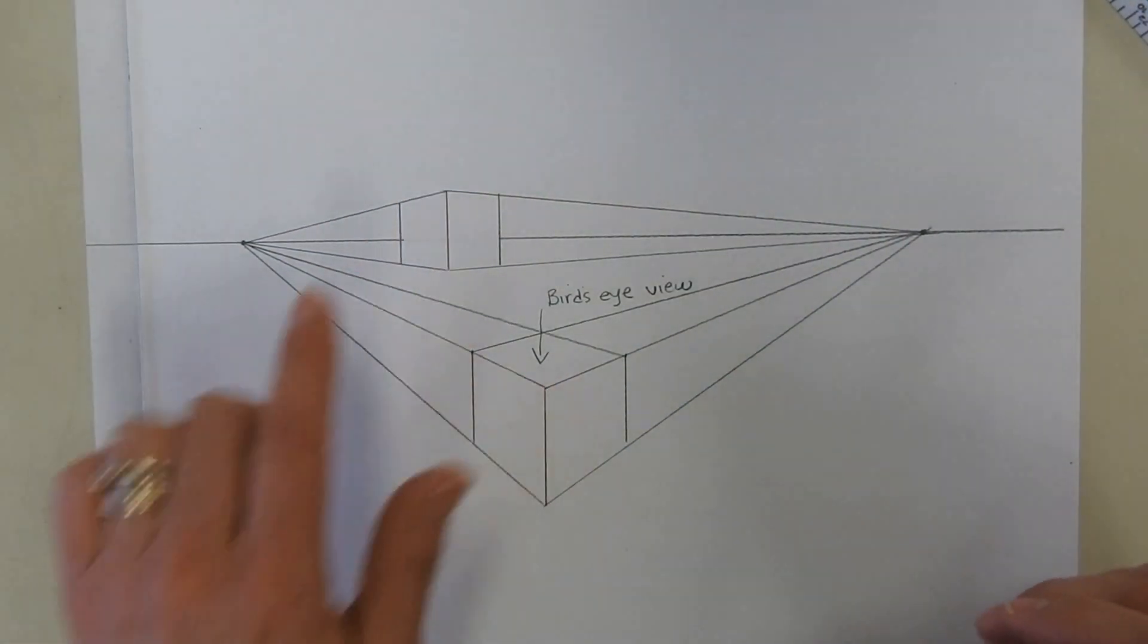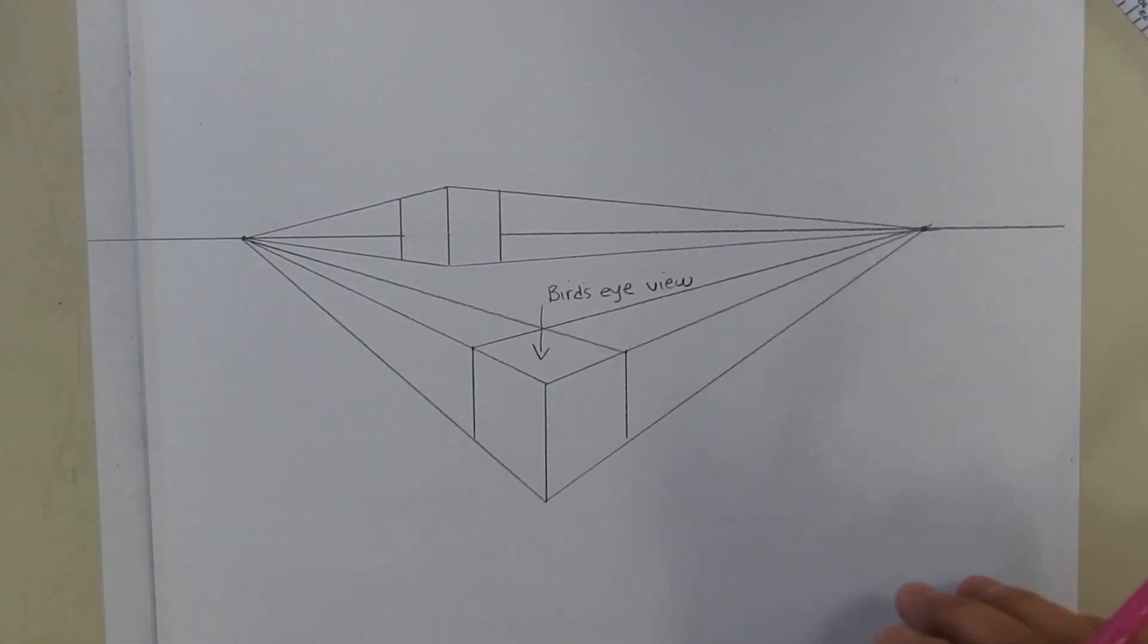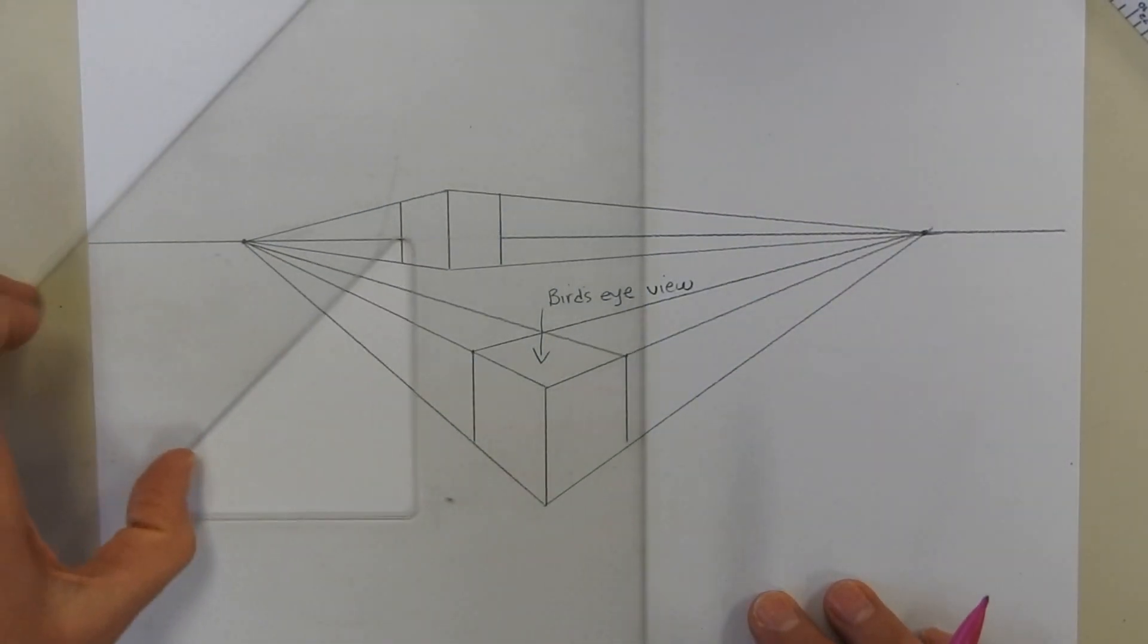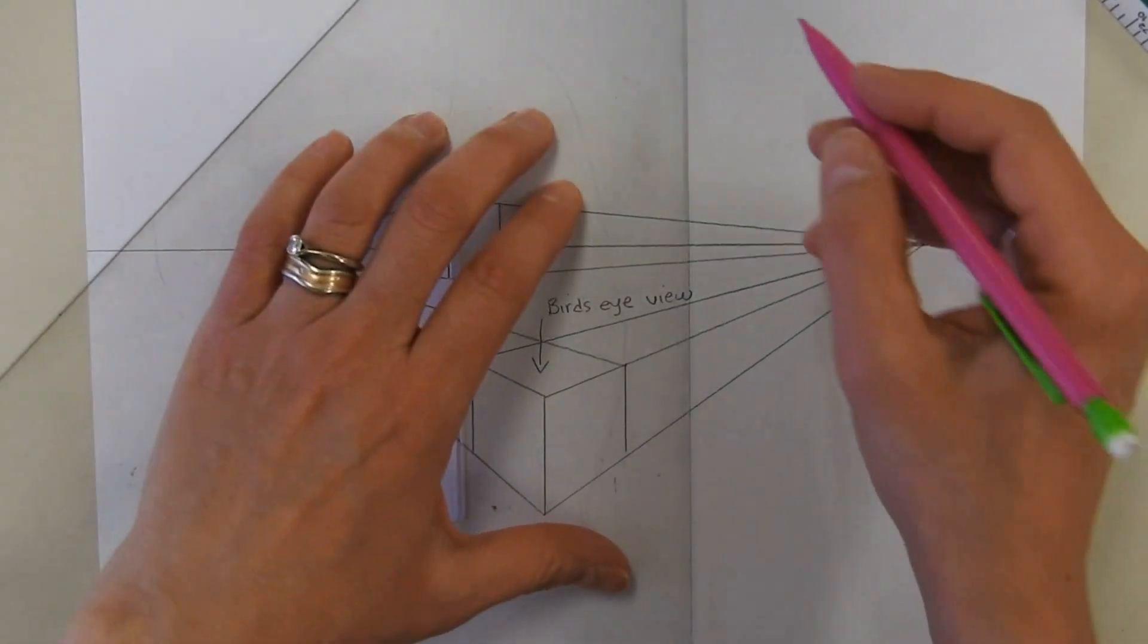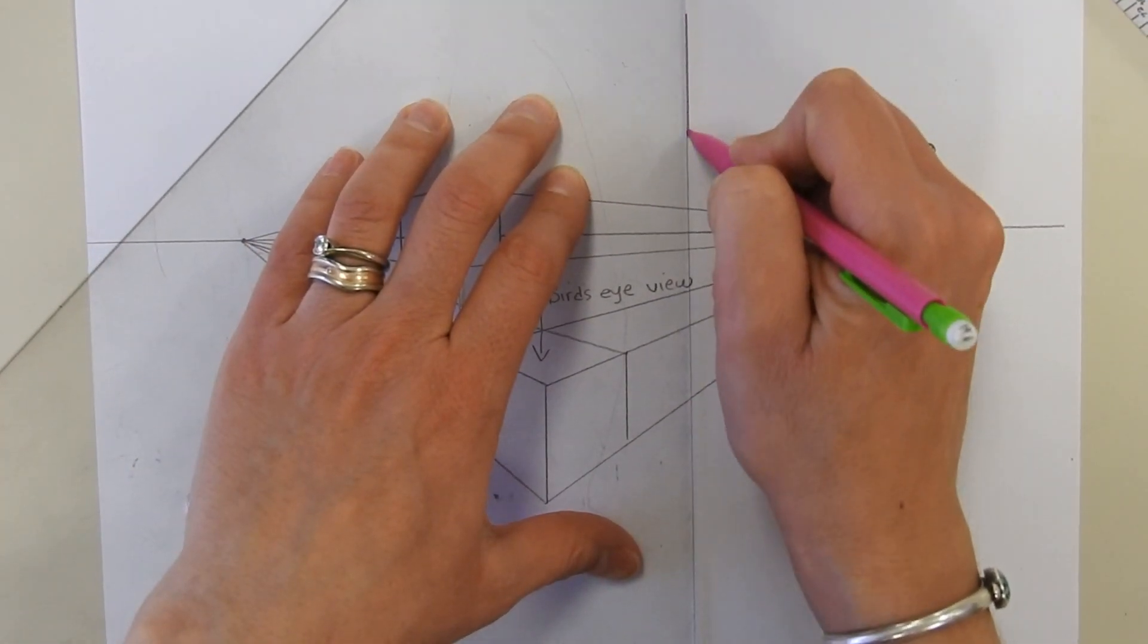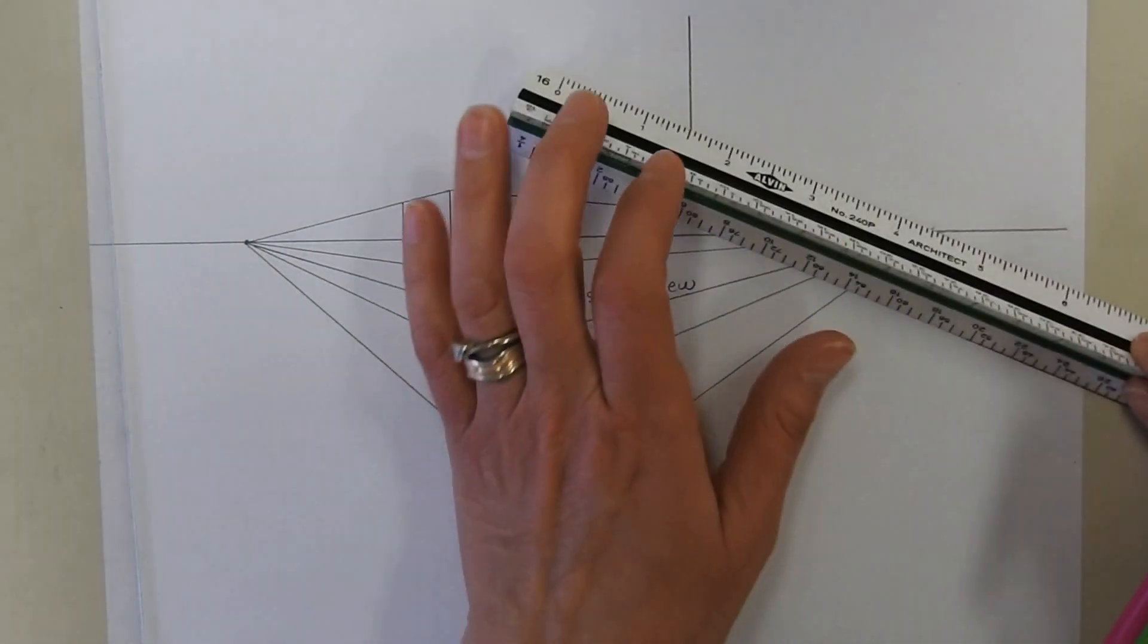Okay, so this view right here is just a straight ahead view right on the horizon line. Now we can do one up in the sky. So same kind of thing - we'll make our leading edge like this, we're going to take...